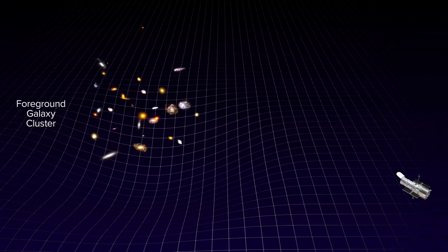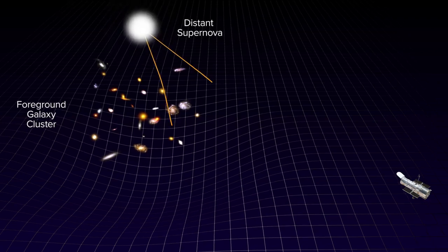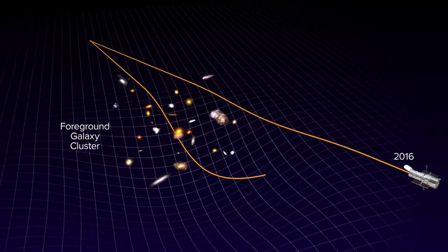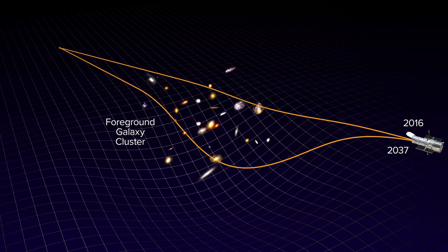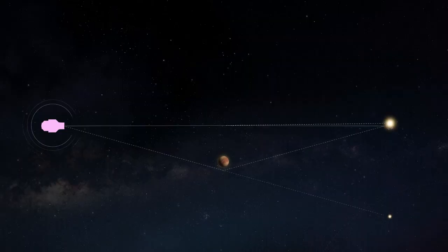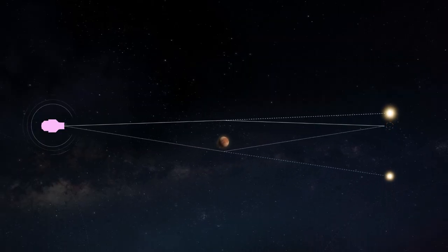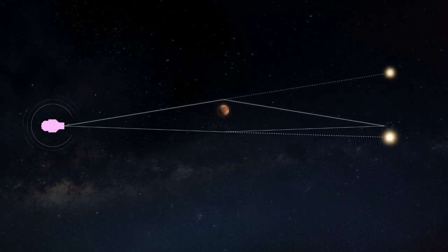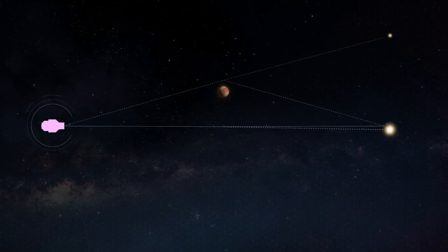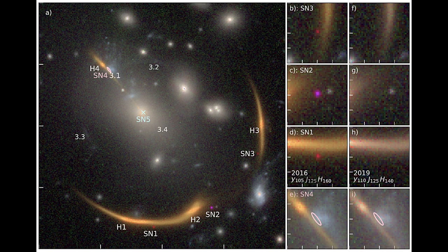The 2016 supernova in MRG-M0138, named Requiem, was particularly noteworthy within this exclusive group. Situated 10 billion light-years away, Requiem belonged to the Type Ia supernova category, commonly used as a standard candle for measuring cosmic distances. Models indicated that one of the supernova images would be significantly delayed due to its trajectory through the extreme gravity of the cluster, becoming visible only in the mid-2030s. Unfortunately, Requiem was discovered in 2019, long after it had faded, preventing the collection of sufficient data to measure the Hubble Constant at that time.